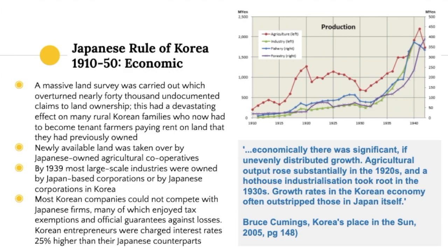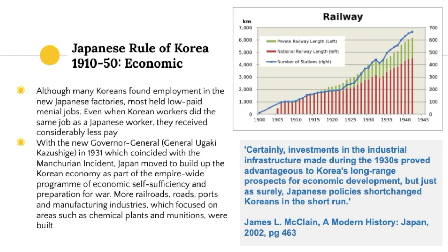Korean companies could not compete with Japanese firms, who enjoyed tax exemptions and official guarantees against losses. Korean entrepreneurs were charged interest rates 25% higher than their Japanese counterparts. As Cummings notes, growth was unevenly distributed — agricultural output rose substantially in the 1920s and industrialization took root in the 1930s, with growth rates in Korea's economy outstripping those in Japan itself. Koreans did find employment, but mostly in low-paying jobs and received less pay for the same positions.